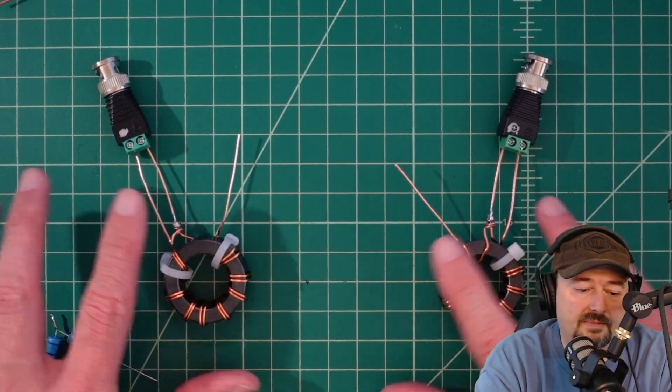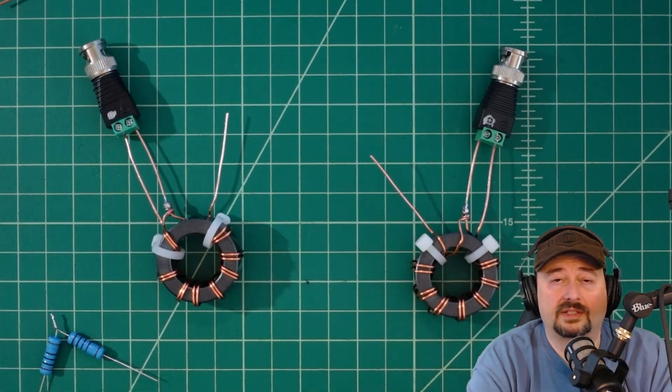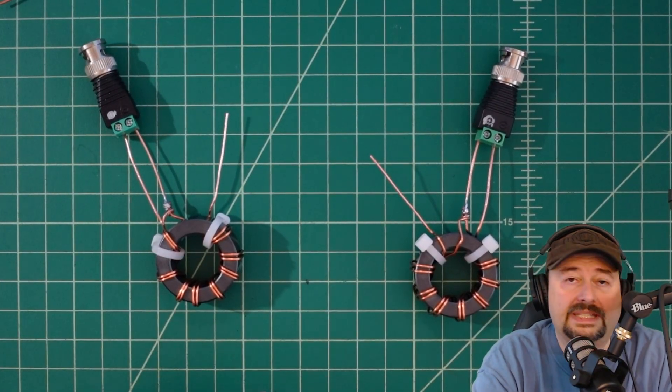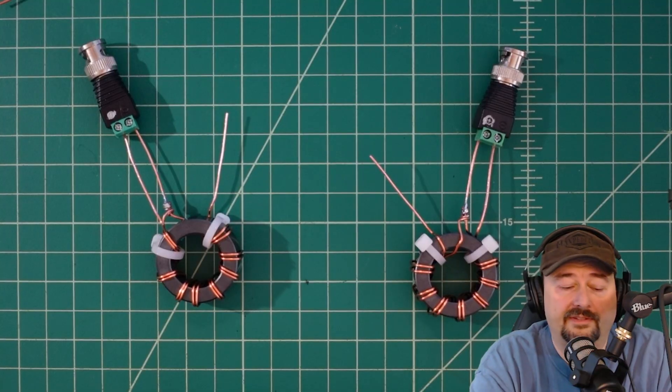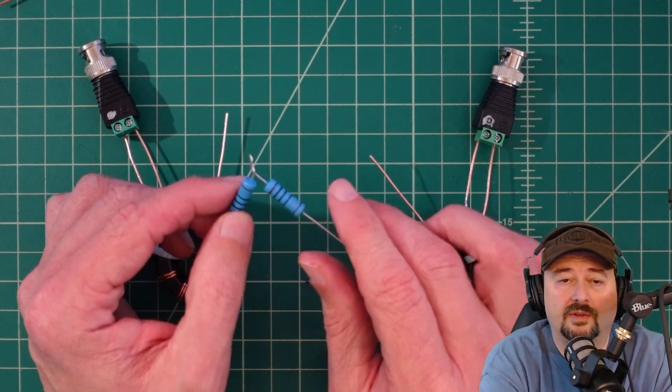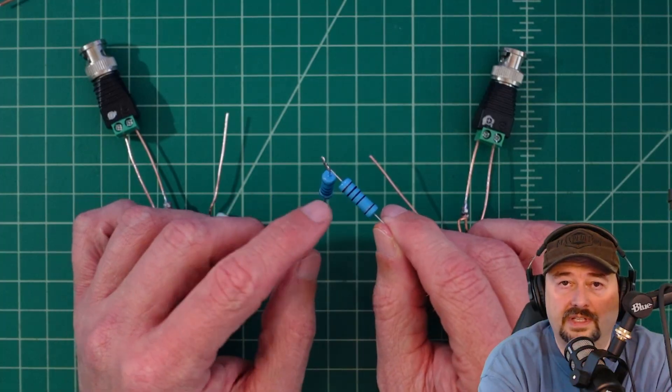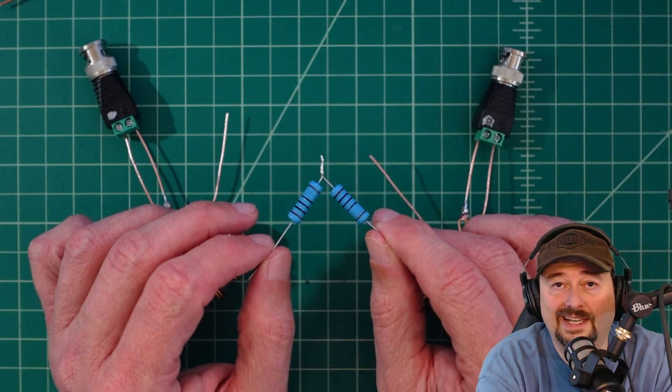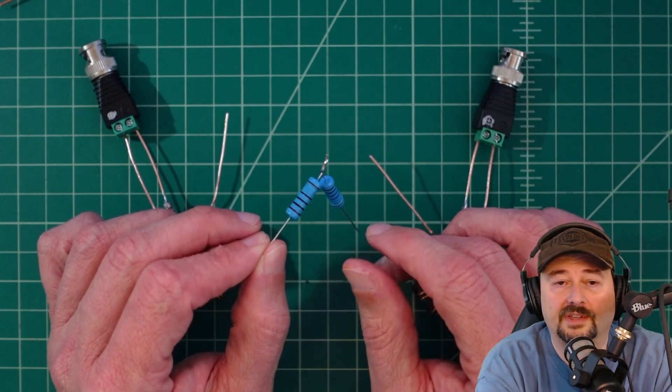What I want to do now is test the ability of these cores to actually transform impedance from 200 ohms down to 50 ohms. In order to do that, I've just taken these two resistors. Each one of these is 100, actually they're like 99.4, which is close enough for the demonstration.